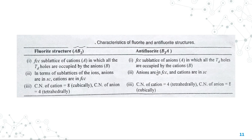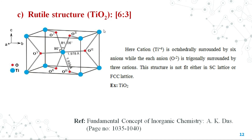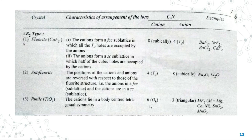The rutile structure is seen in titanium dioxide. In this structure, the cation titanium (Ti4+) is octahedrally coordinated. This is a characteristic of AB2 type crystal lattices. Thank you.